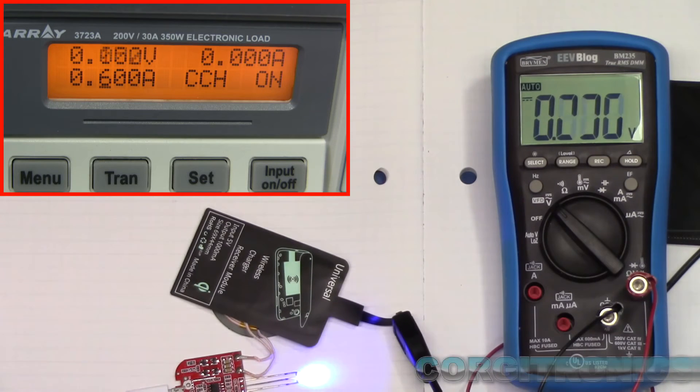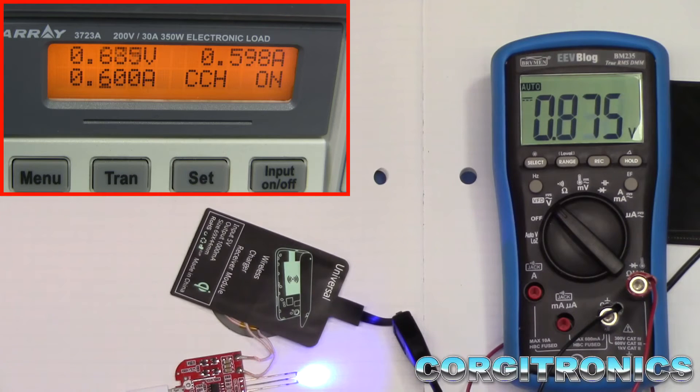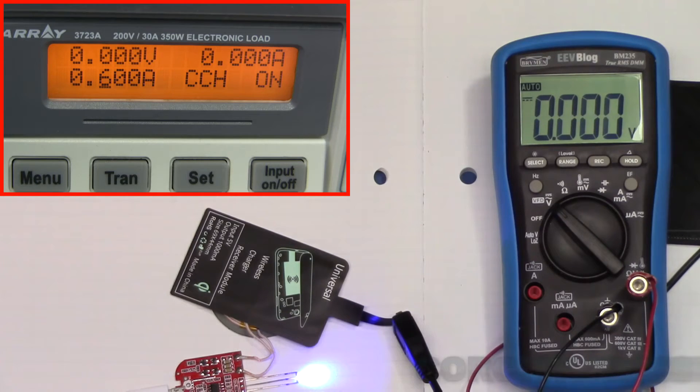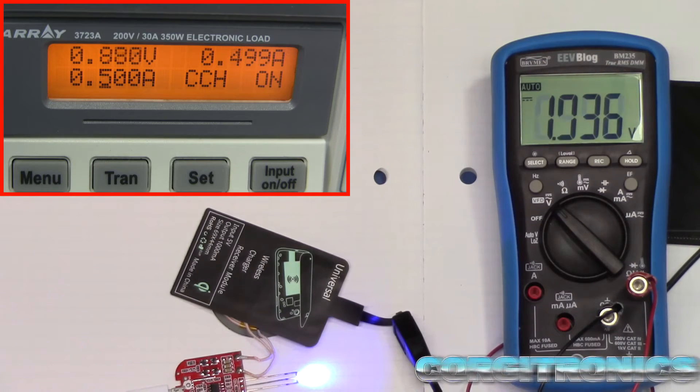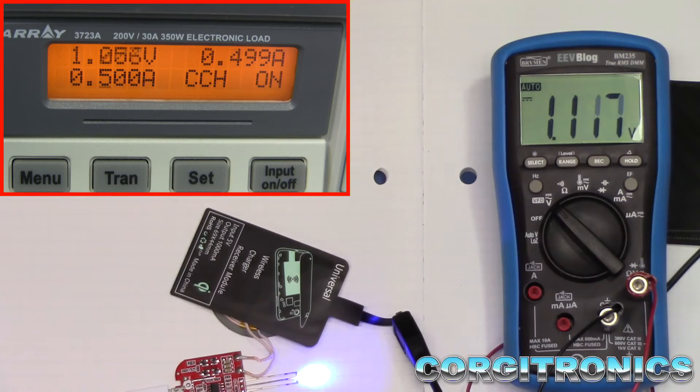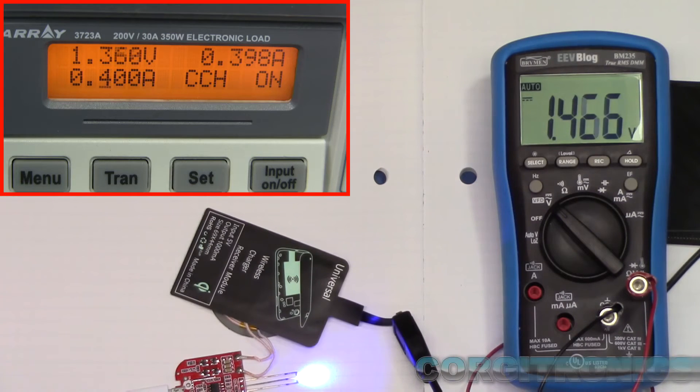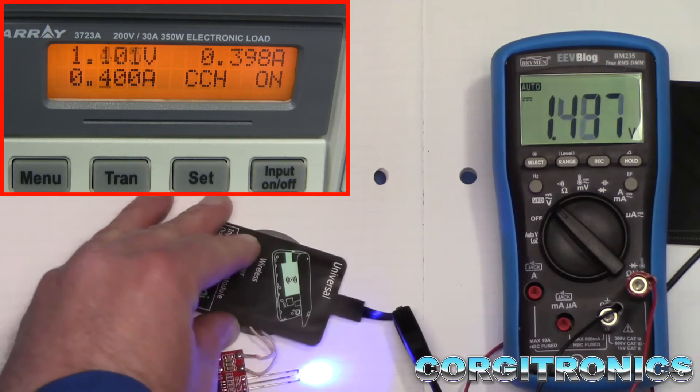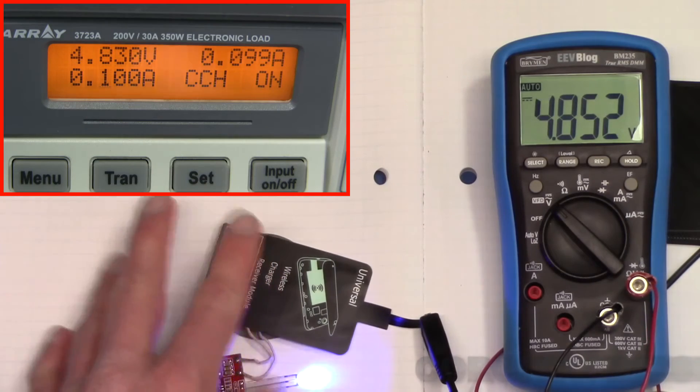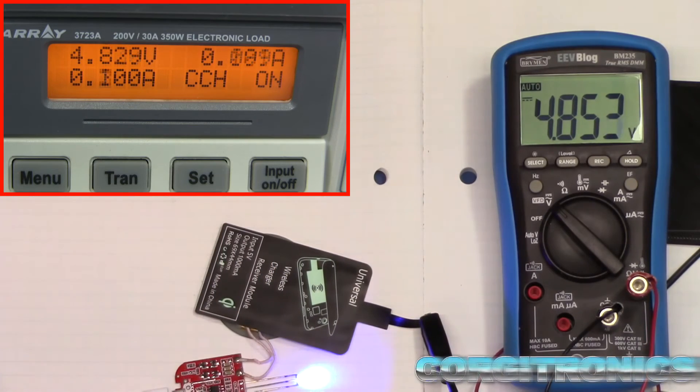Whoa. And we've completely dropped out at pretty much completely dropped out here at 0.5 amps. So at 600 milliamps. Yeah, this is just not working very well. I'll try it in another position and see if that helps.